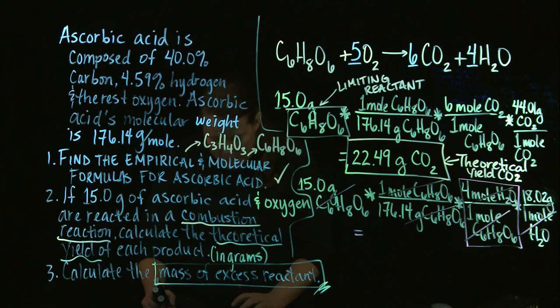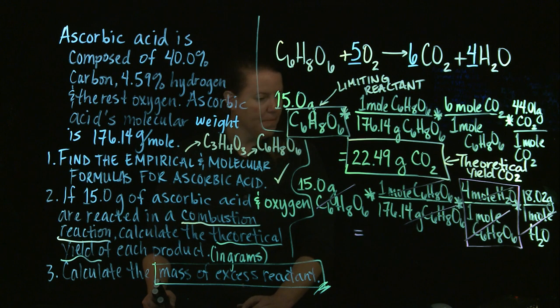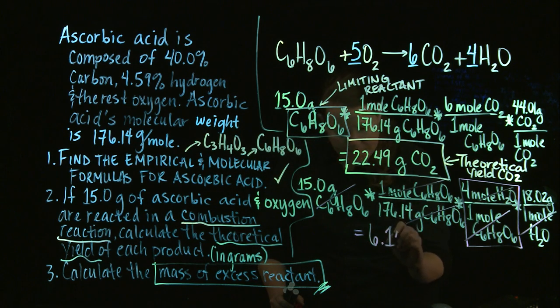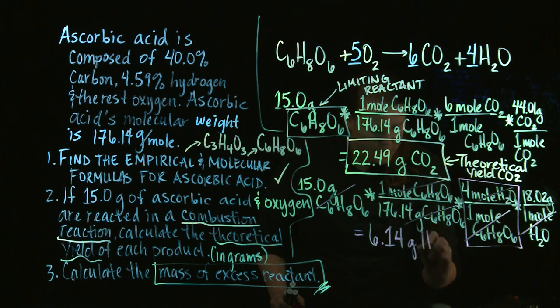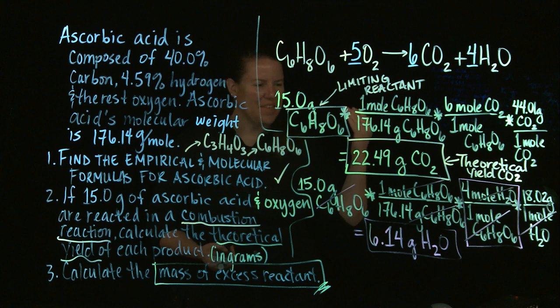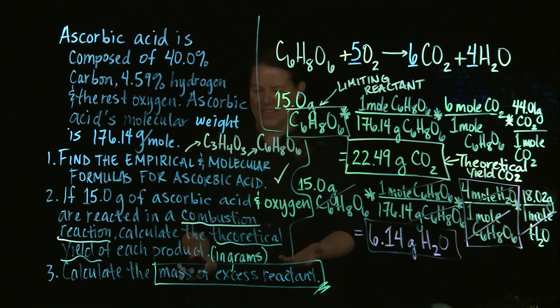Let's go ahead and calculate that out. So, 15 divided by 176.14. Alright, I just was doing something real quick. Right quick. Alright, 6.13. Or, 6.14. 6.14 grams of H2O. Awesome! Look at that! So, now I have the theoretical yield of H2O. I have the theoretical yield of CO2. I can totally do this! That's awesome!